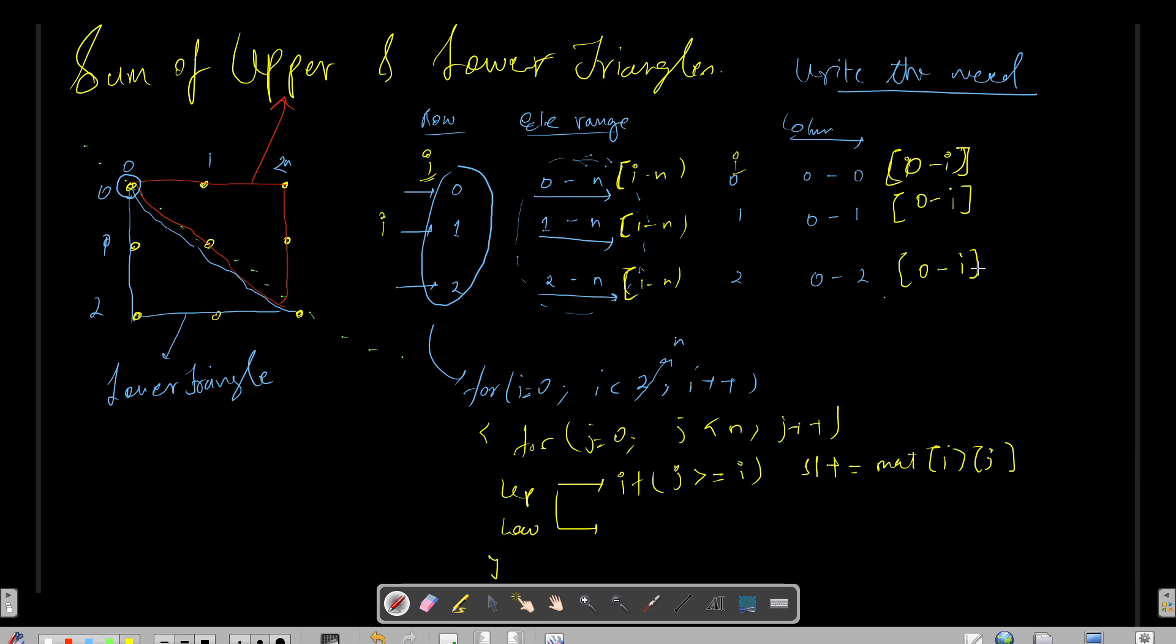We do not need to handle 0 because the for loop itself is starting from 0. I just have to say if j is less than equals to i, then I have s2 which will have s2 plus equals to matrix[i][j]. At the end of the nested for loop, this will have your upper sum and this will have your lower triangle sum.